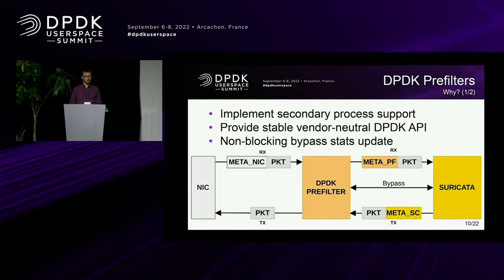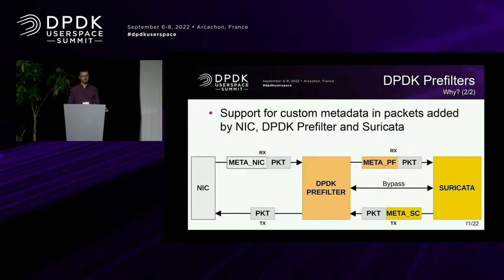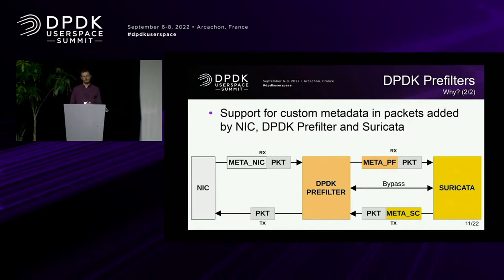When Suricata tells the pre-filter that it doesn't want to see a flow anymore, it still wants to see how active the flow is. If it's still active, it wants to get at least the stats of that flow. So it periodically asks the DPDK pre-filter for these statistics through the bypass channel shown in the middle between DPDK pre-filter and Suricata. There is also support for metadata fields, which can improve the processing speed of Suricata itself or other parts of the whole architecture.